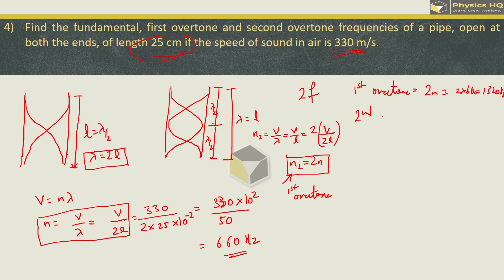Similarly, second overtone will be 3N, which is 3 into 660, which is 1980 Hz. I hope you understand. Next one we'll see.